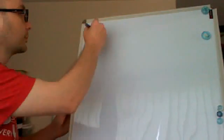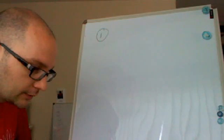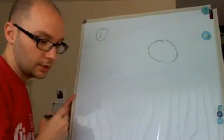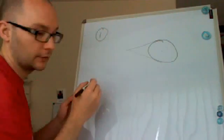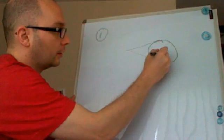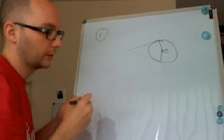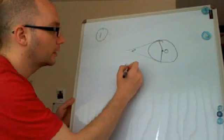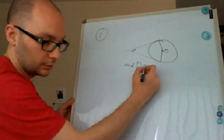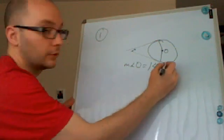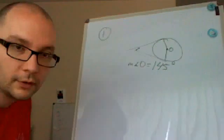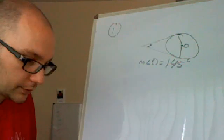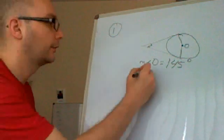The first problem is assume that lines that appear in tangents. Let me draw the picture here. Here we have a circle, we have a couple tangents, and this is point O. And then there's x degrees, and they tell us that the measure of angle O is equal to 145 degrees. Can you guys see that okay? With this problem, they ask you to find the value of x.